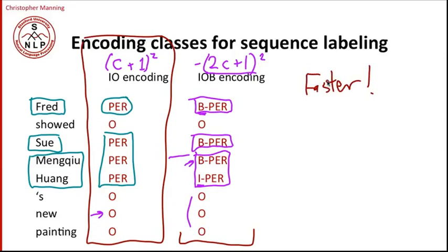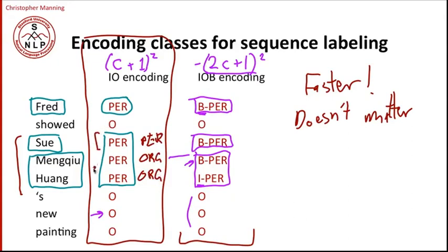And it turns out that the slight limits in the representation aren't really a problem in practice. And there are two reasons that it's not a problem in practice. One is situations like this very rarely occur. While you quite often get entities next to each other, they're most commonly entities of different classes. But the IO encoding has no problem if it's a person followed by an organization. Then it can see the boundary perfectly well. You only have a problem when you have two entities of the same class, and that happens pretty rarely.